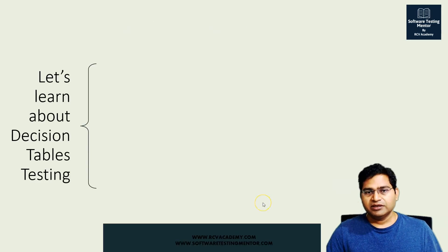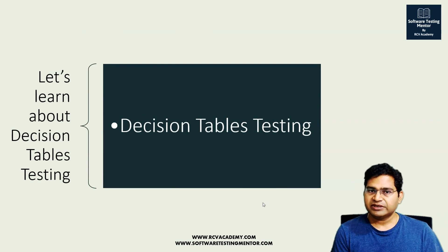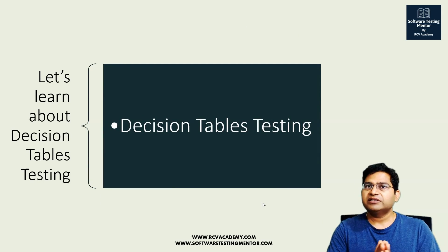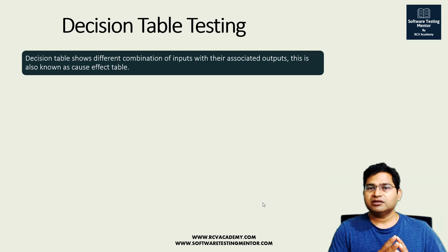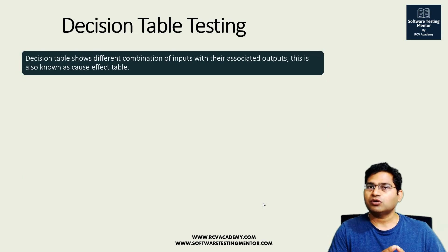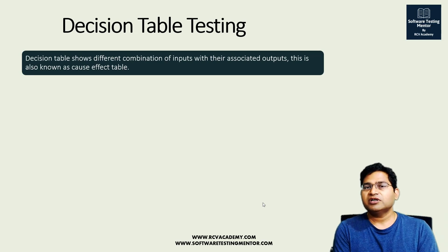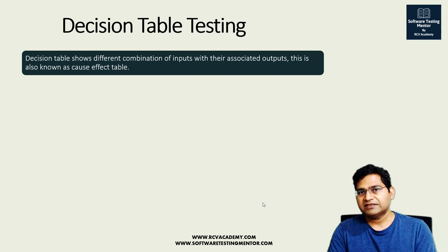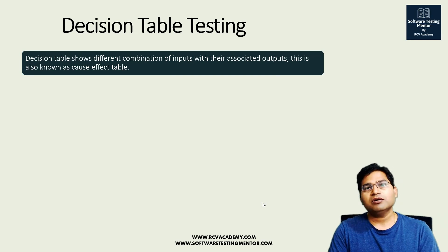The next concept is decision table testing. Decision tables are combinations of inputs with their associated outputs, also known as cause-effect tables. We'll stop here for equivalence partitioning and boundary value analysis — in the next class, decision tables and other test design techniques will be covered. That's all for this class, see you next time.